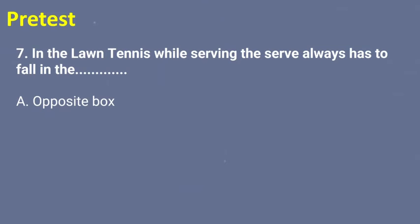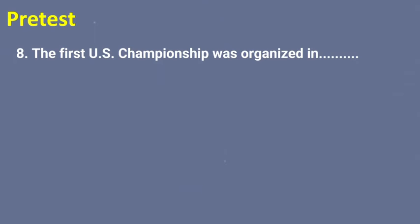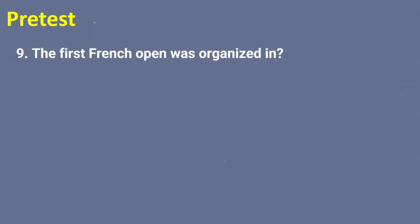Number eight: the first U.S. Championship was organized in — A — 1970, B — 1968, C — 1961, or D — 1959. The first U.S. Championship was organized in 1968. Number nine: the first French Open was organized in — A — 1891, B — 1868, C — 1861, or D — 1859. The first French Open was organized in 1891.